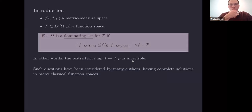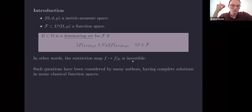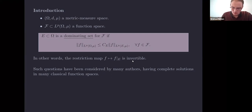In the abstract, if we look at some function space — which we'll denote by script F — living on a domain Omega, and this domain has a metric and a measure associated to it, then a dominating set is a subset E of the domain for which you can continuously reconstruct functions in the space by their values on that set E.